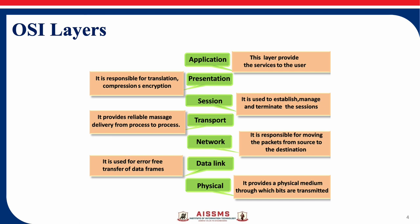The fourth one is the transport layer. The transport layer takes data transferred in the session layer and breaks it into segments on the transmitting end. It is responsible for reassembling the segments on the receiving end, turning it back into data that can be used by the session layer.